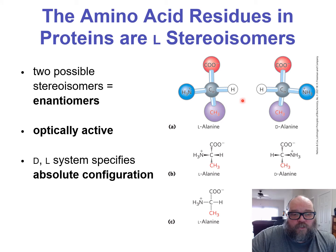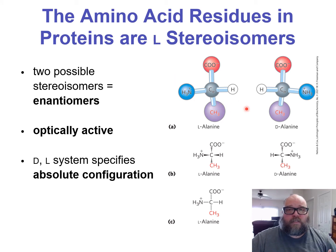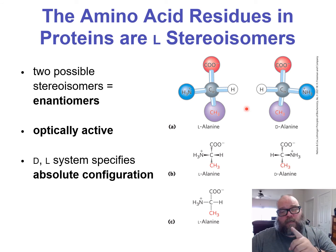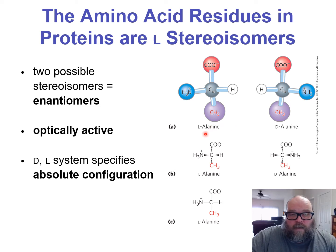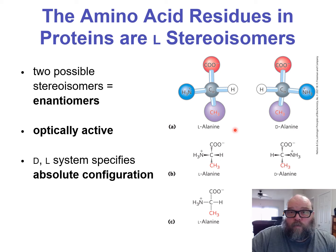Because they have different shapes, they're going to have different functions — remember, shape dictates function. Different shapes, different functions. What could be the difference in function between L-alanine and D-alanine? One is recognized by ribosomes; the other won't be.